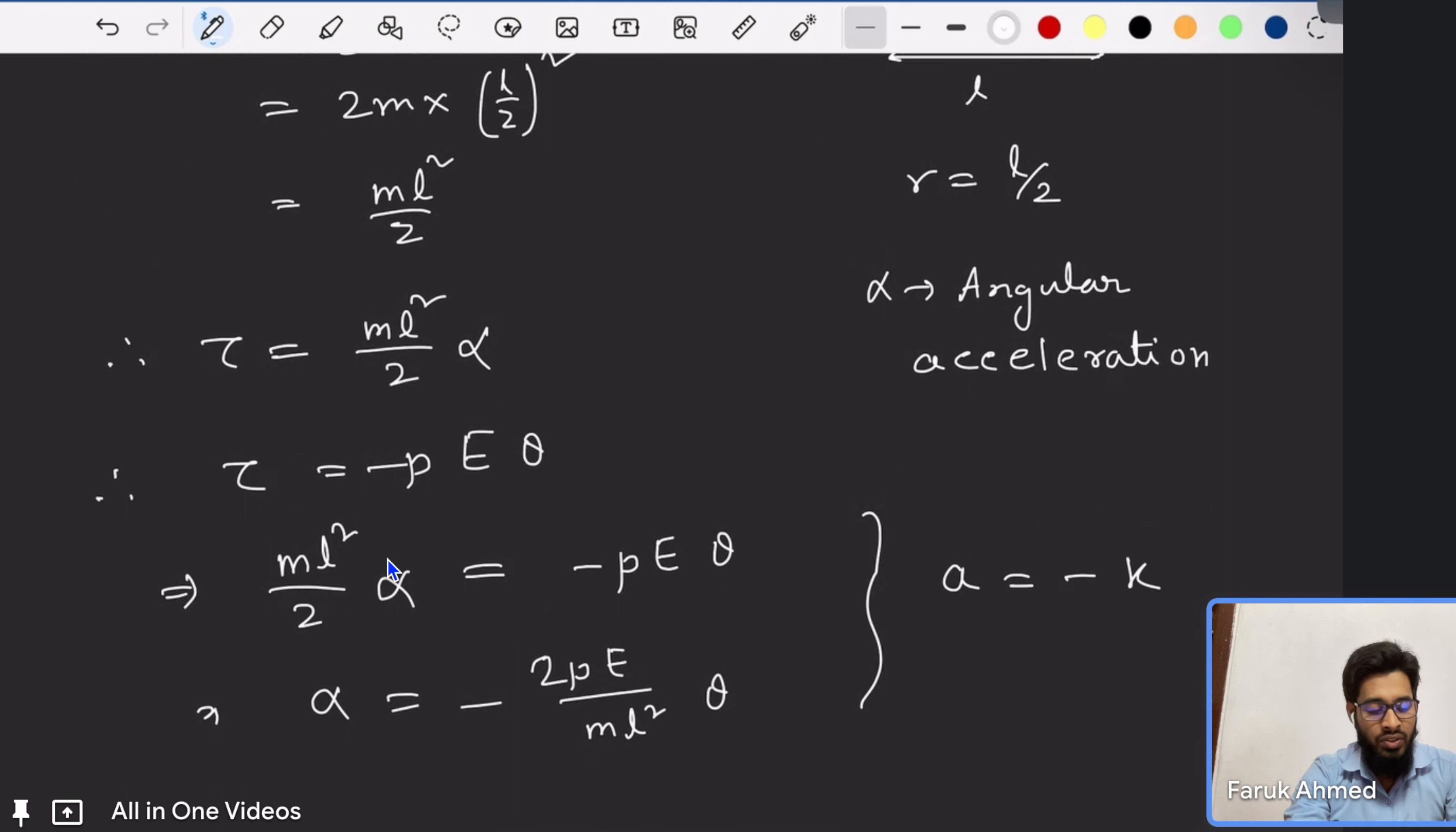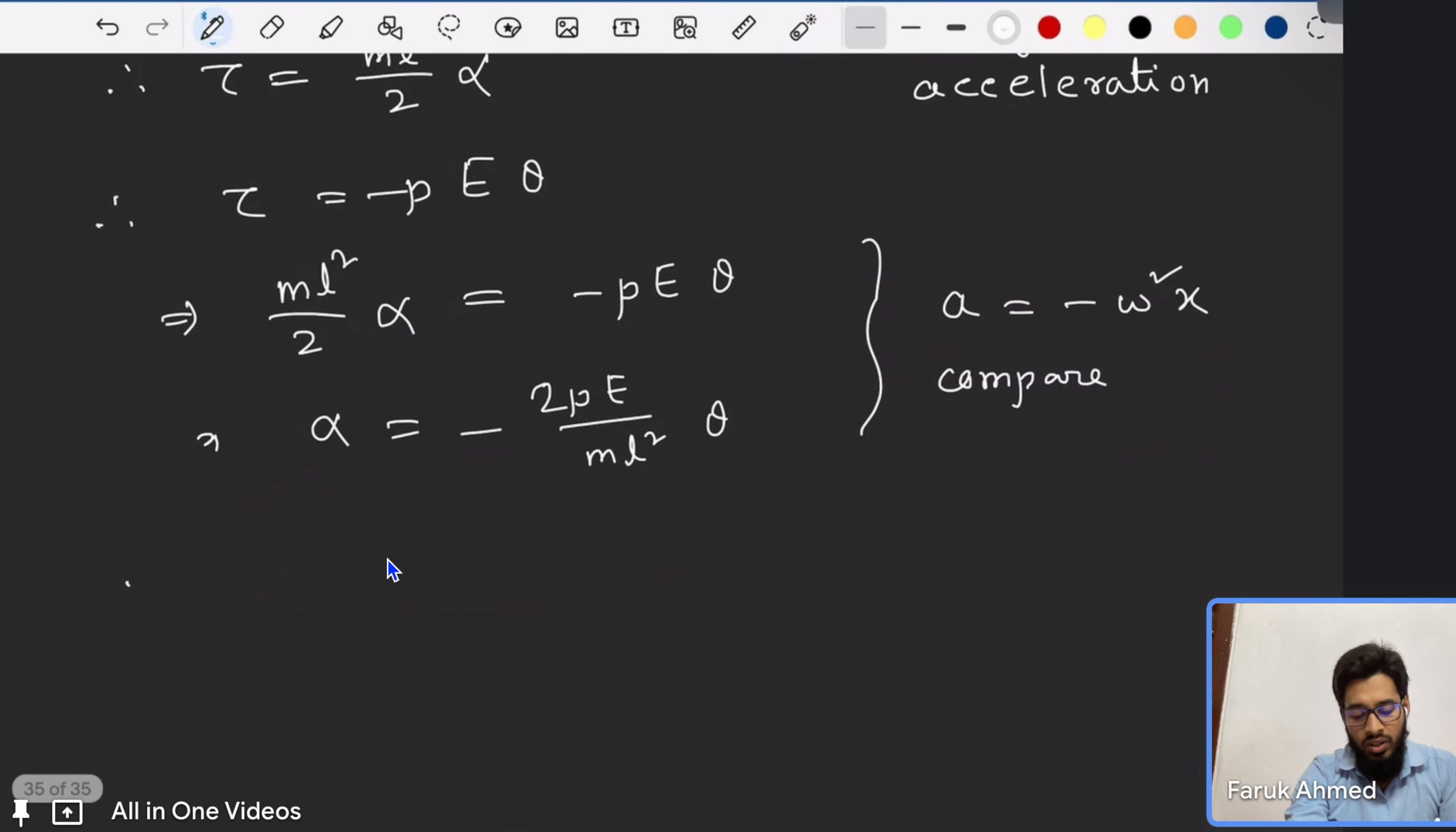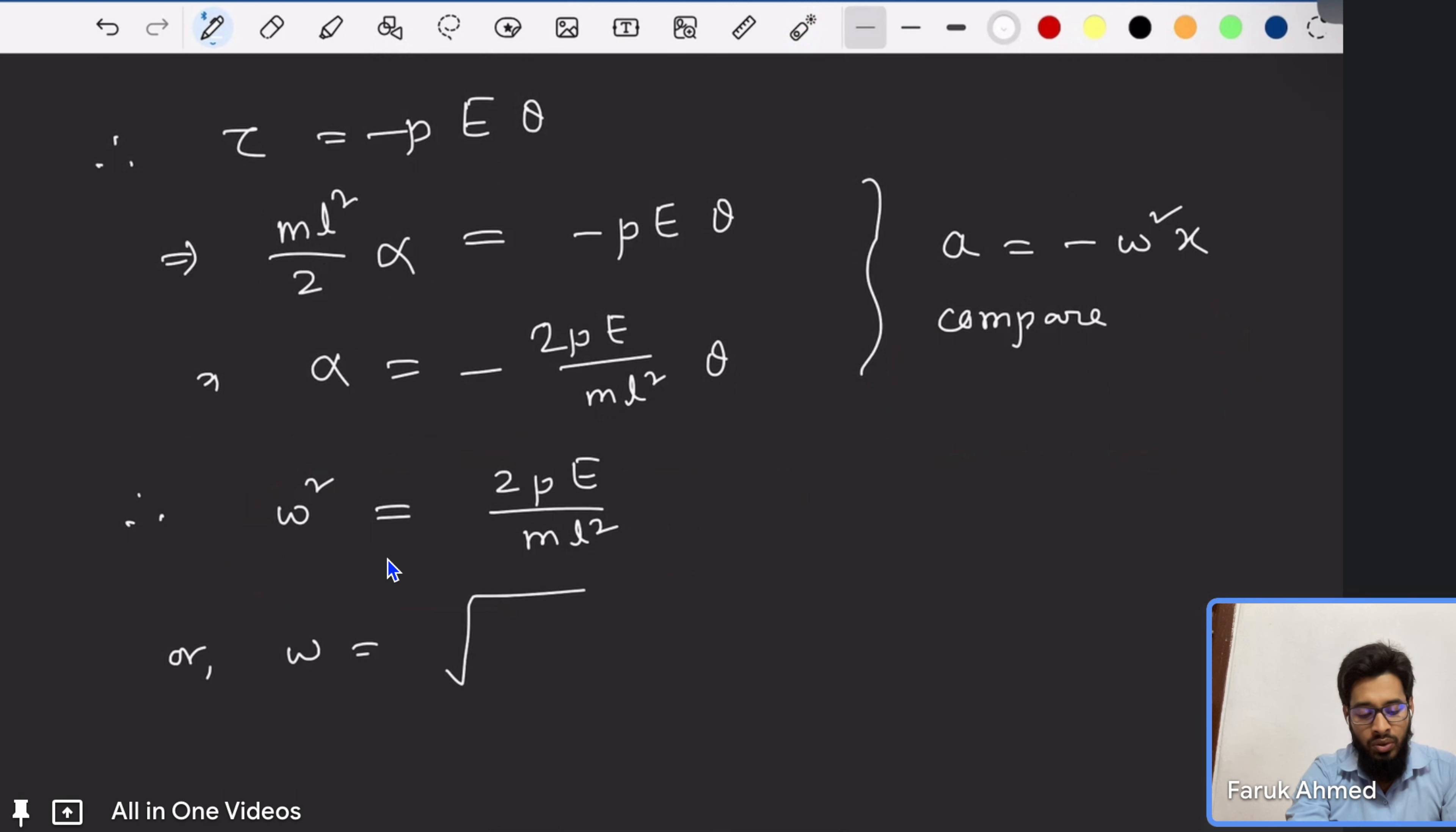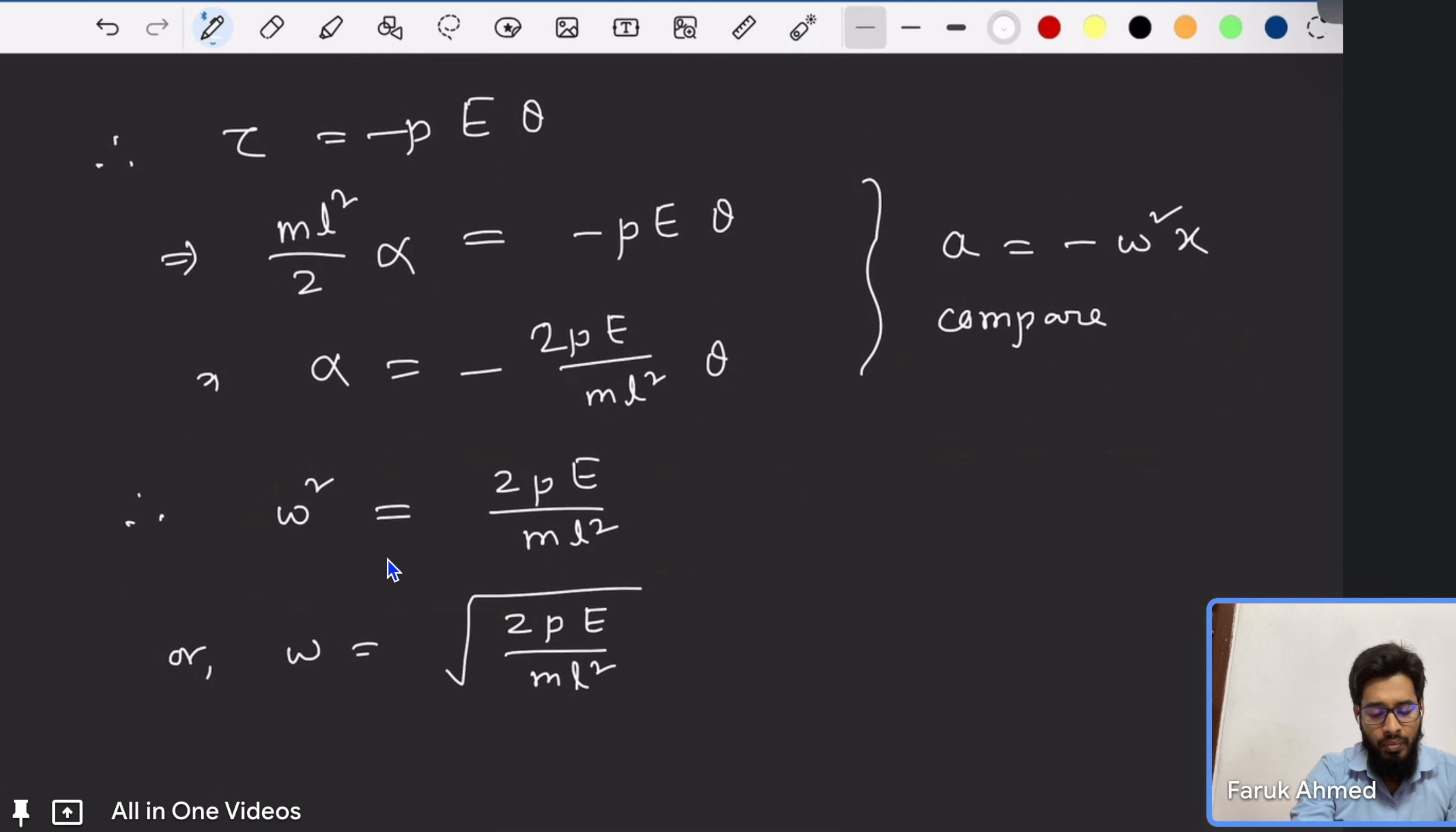Here you can see - isn't it similar to acceleration equals minus omega squared x? This is for linear oscillation, this is for angular oscillation. Alpha equals minus omega squared theta. Therefore we can write omega squared is equal to 2 p E by m l squared. Or we can write omega is equal to square root of 2 p E by m l squared.